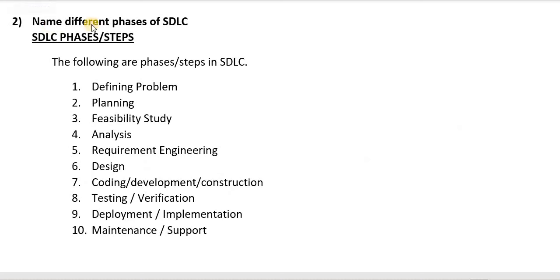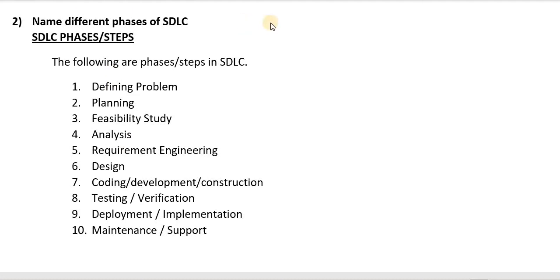Question two: Name the different phases of SDLC. The following are phases or steps in SDLC: 1. Defining problem, 2. Planning, 3. Feasibility study, 4. Analysis, 5. Requirement engineering, 6. Design, 7. Coding, 8. Development or construction phase, 9. Testing or verification, 10. Deployment or implementation, 11. Maintenance and support. Write all these phases in sequence.